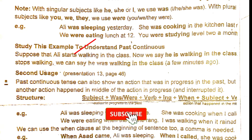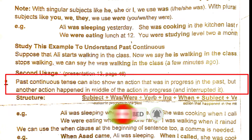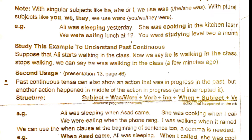The second usage: past continuous tense can also show an action that was in progress in the past, but another action happened in the middle and interrupted it. Structure: subject + was/were + verb-ing + when + subject + verb. Example: 'Ali was sleeping when he came.'